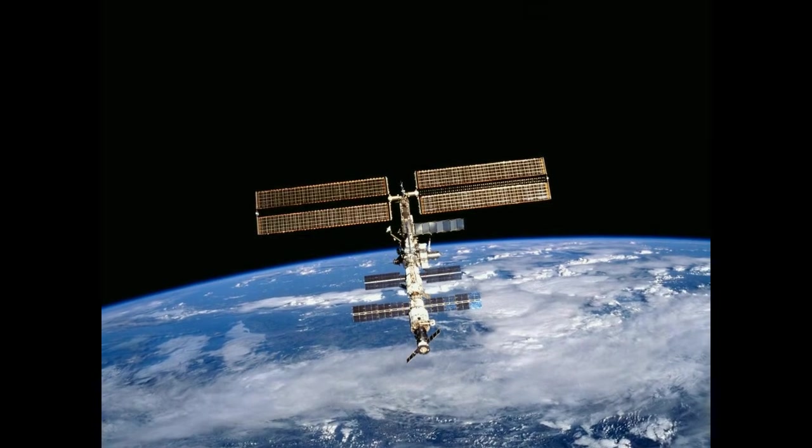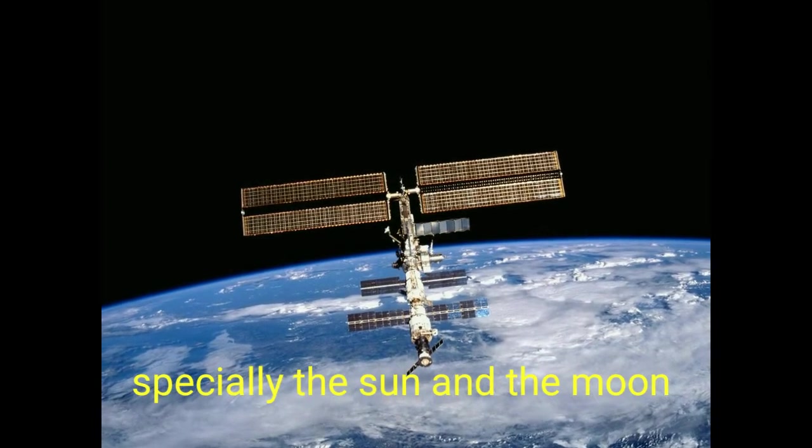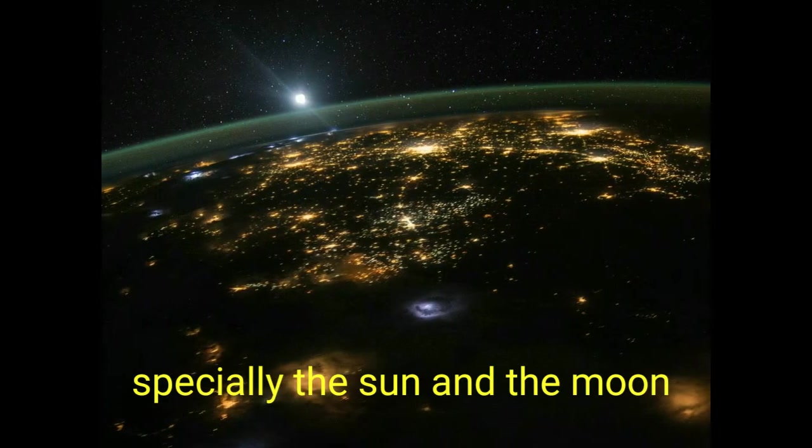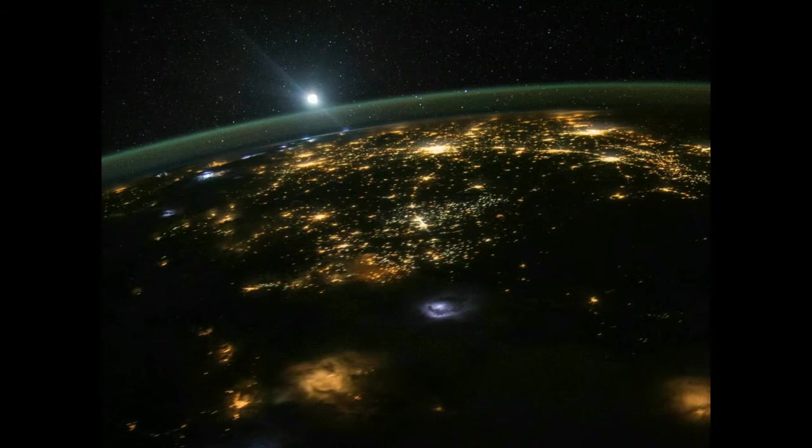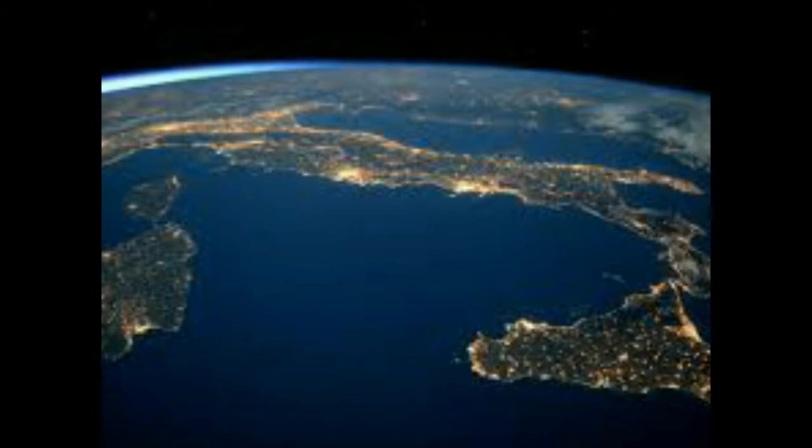Earth's gravity interacts with other objects in space, especially the Sun and the Moon, which is Earth's only natural satellite. Earth orbits around the Sun in 365.256 solar days, a period known as an Earth sidereal year.